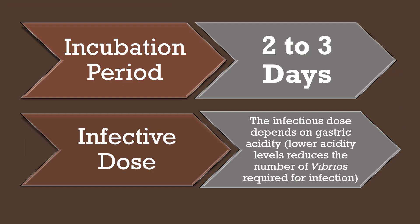The incubation period for Vibrio cholerae is 2 to 3 days, and the infectious dose depends on the gastric acidity, because lower acidity levels reduce the number of Vibrios required for infection.